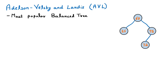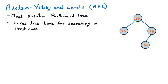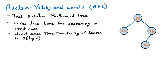AVL tree was introduced in 1962 by Adelson, Velsky, and Landis. Searching takes less time in the worst case — the worst case time complexity of searching is O(log n). Comparing with binary search tree: in binary search tree, worst case complexity was O(n), whereas in AVL we have O(log n). So even in the worst case, AVL takes much less time compared to binary search tree.